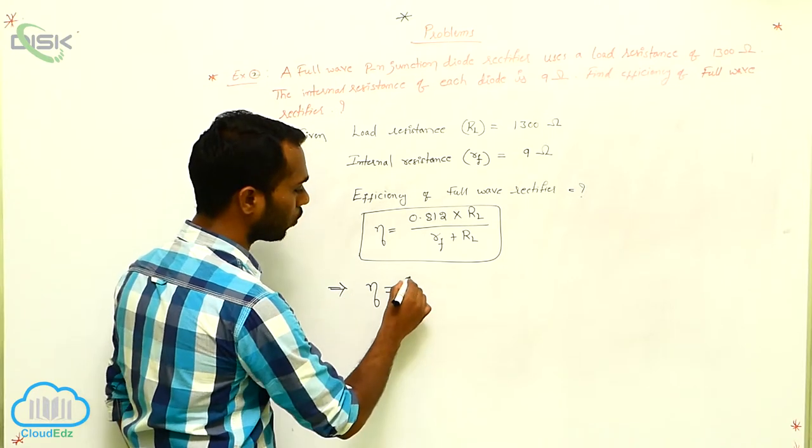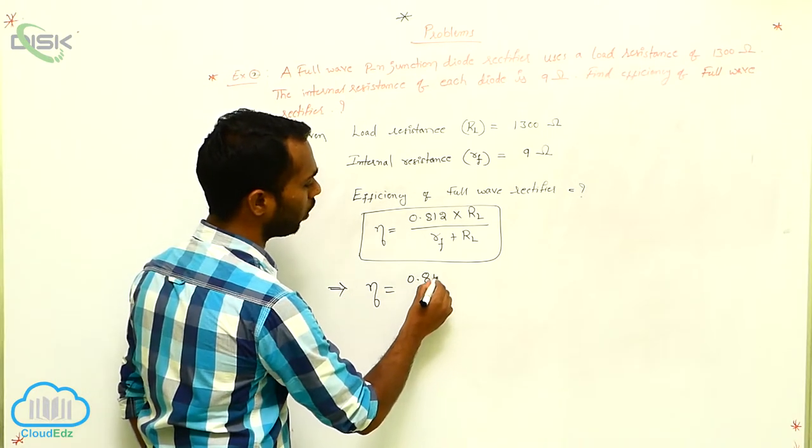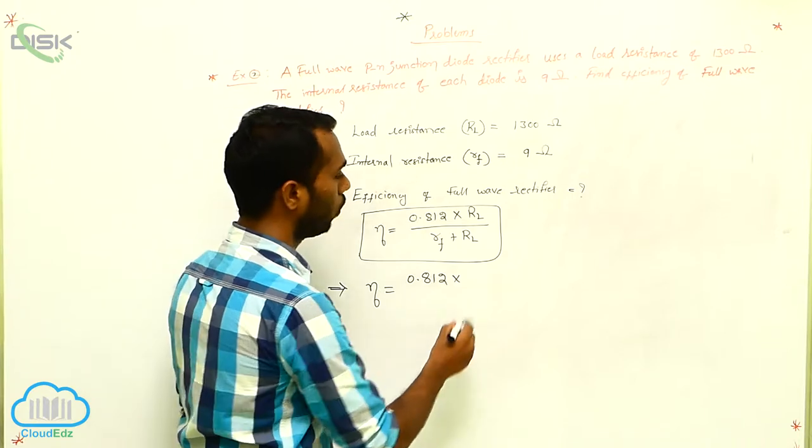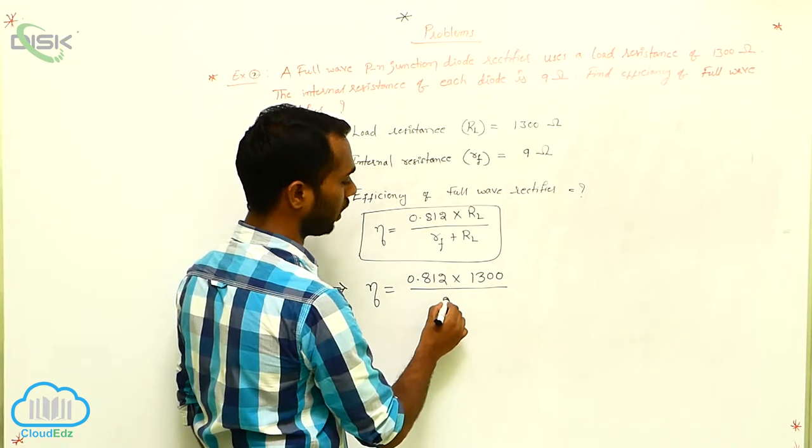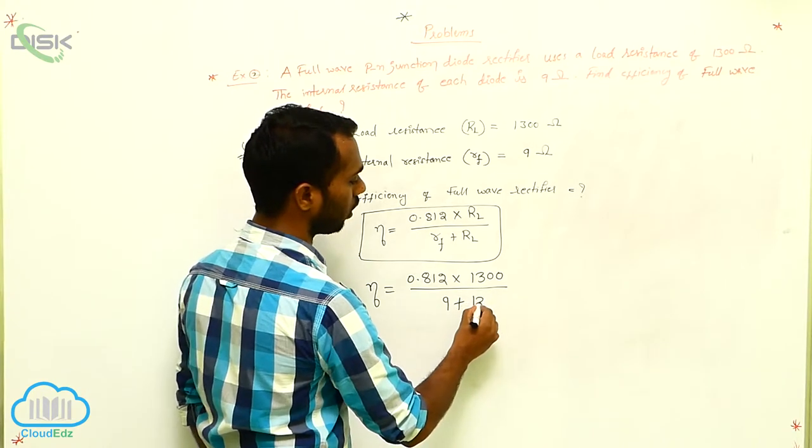Eta is equals to 0.812 into 1300 by RF, that is 9 plus 1300.